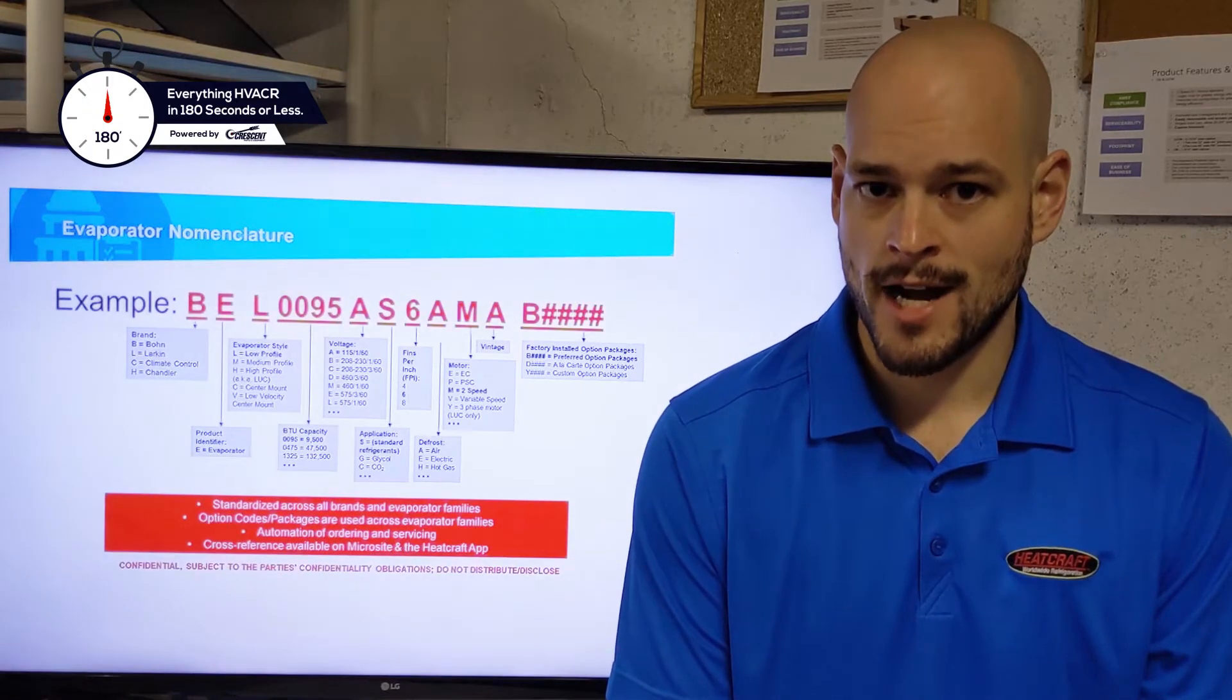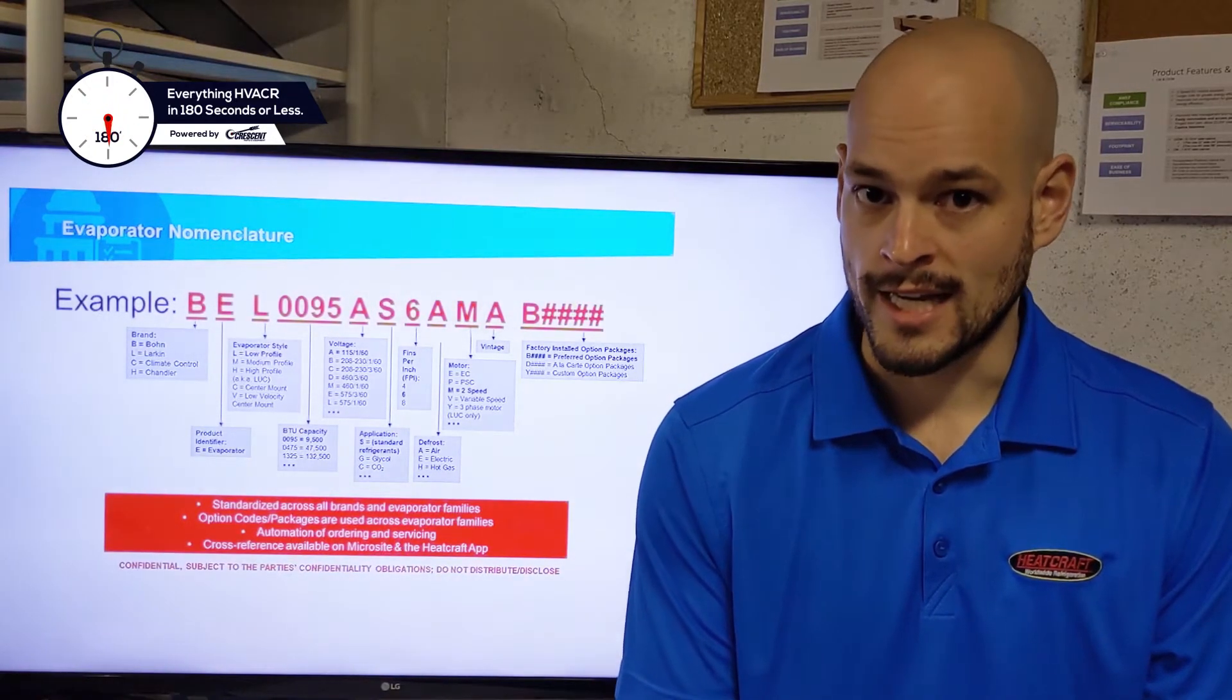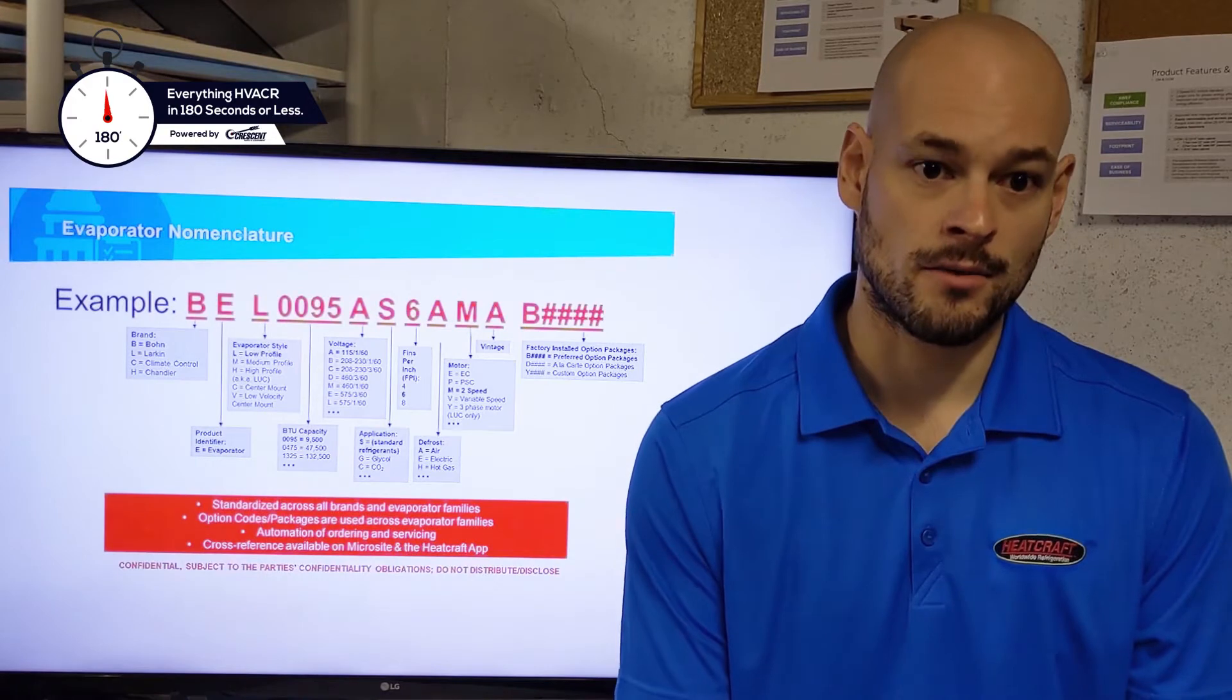Your next digit is going to be your product identifier. All the evaporators are going to have an E in this slot. All your condensing units will have a C in that slot.